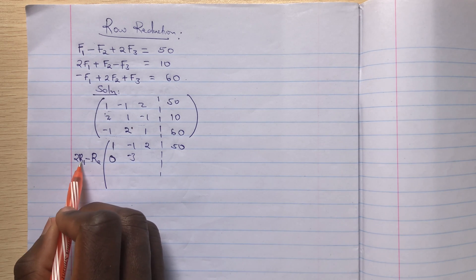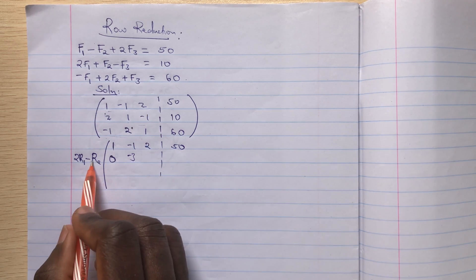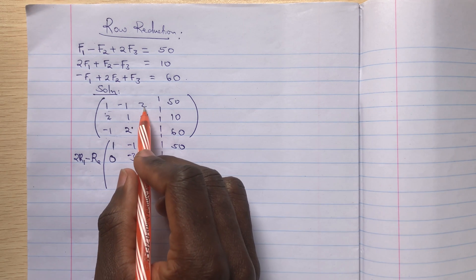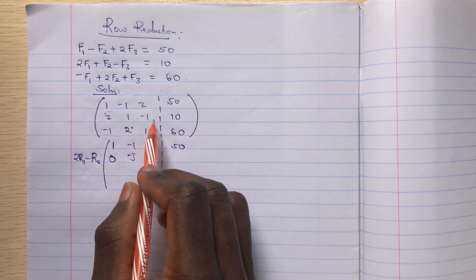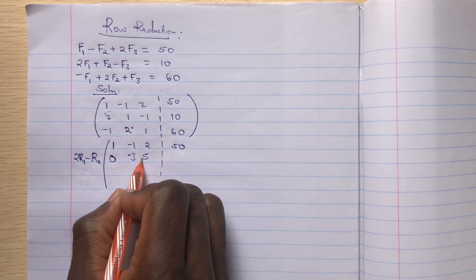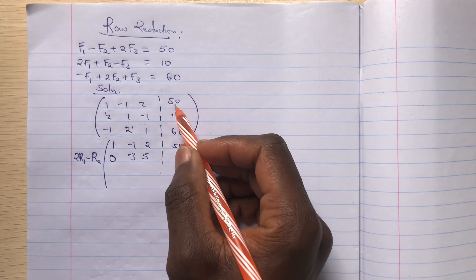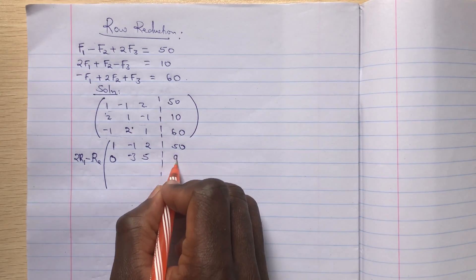Then this, twice of this minus negative 1. So it will be positive 4 minus negative 1 is positive 5. This is 100 minus 10, that's 90.